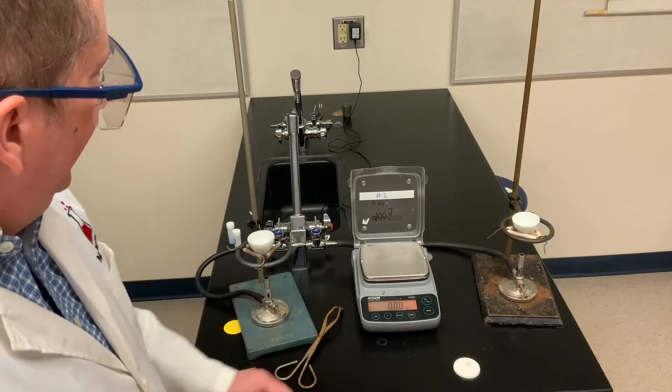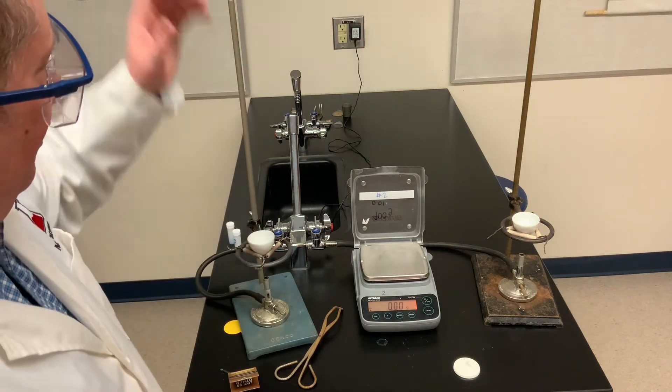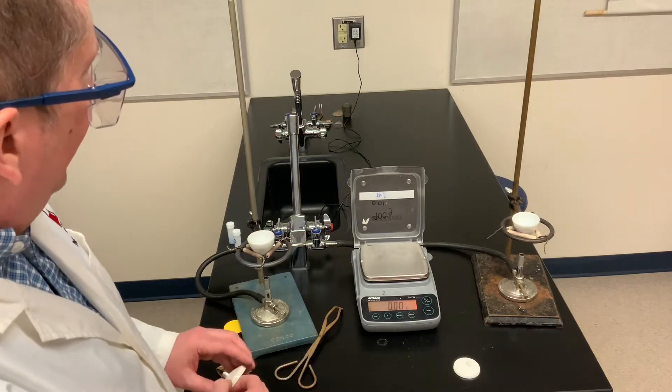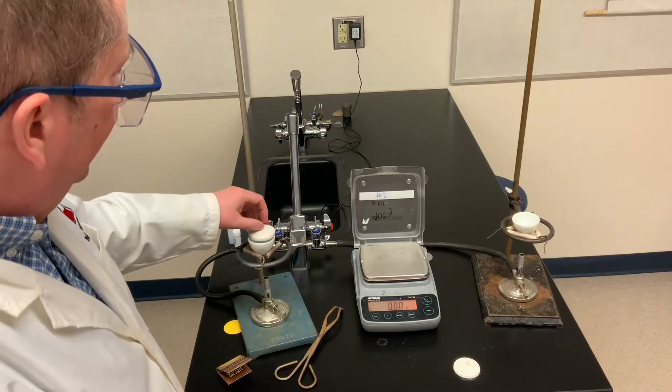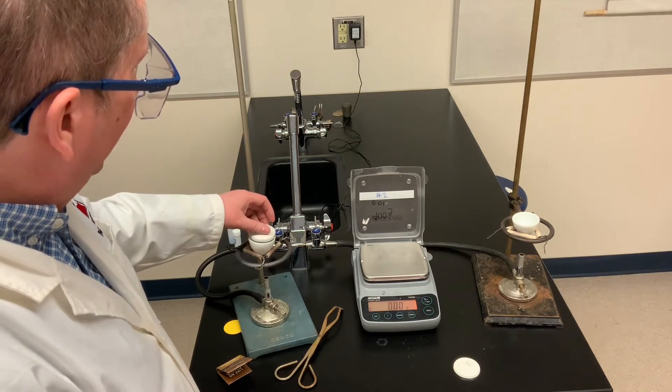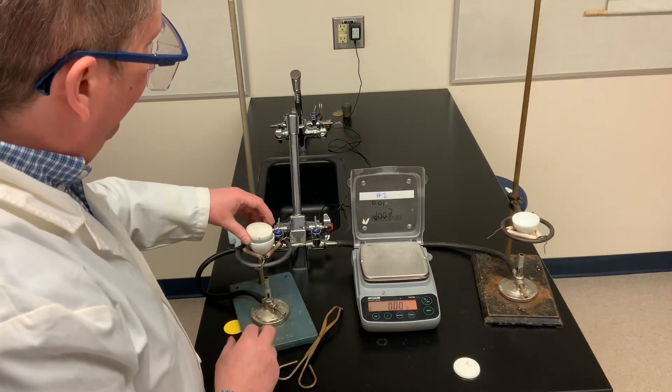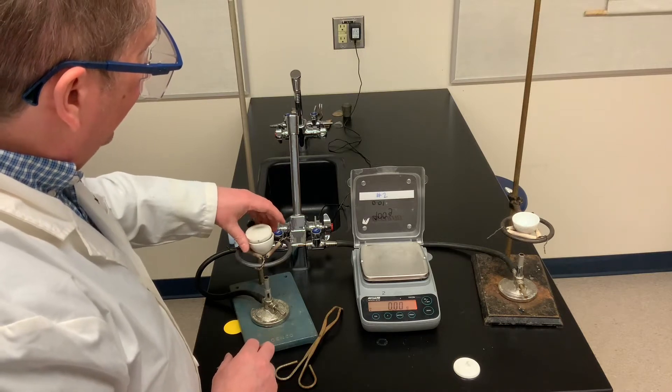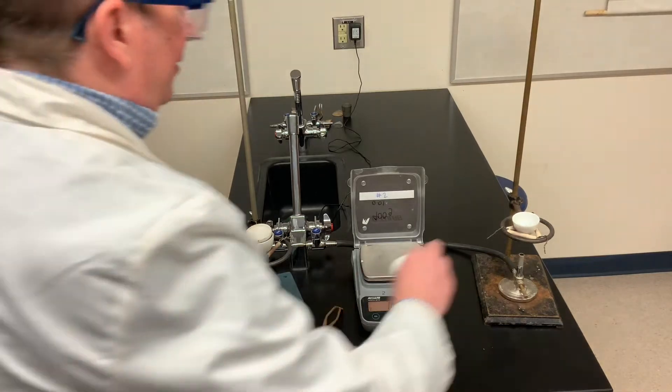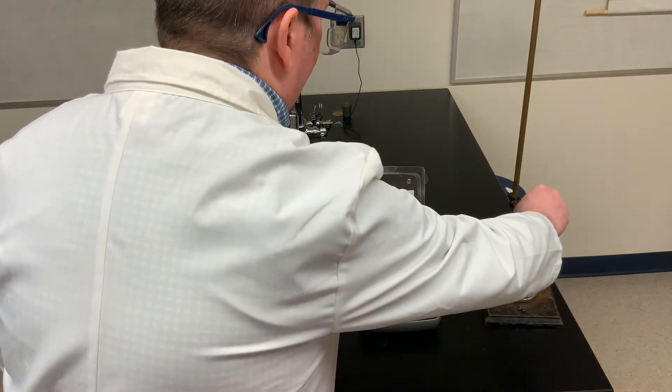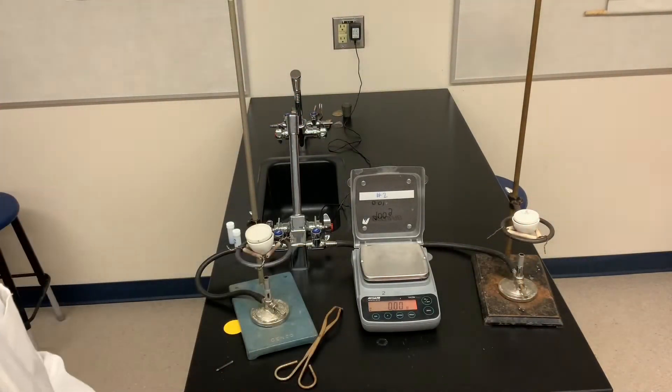Now as we heat the salt, the water of hydration is going to escape and come out to the air. But it is possible that there could be some spitting of the salt. So we're going to cover the crucibles with lids, but not completely. You don't want to cover it completely because we do want the water to escape from the crucible during the heating. So notice I'm leaving a bit of a gap for the water to escape. And now we're ready to start heating.